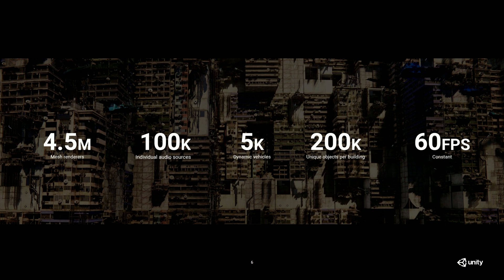Some numbers: in the scene that you saw, we have four and a half million mesh renderers, 100,000 individual audio sources. It's a little hard to hear the audio here, but all of those air conditioners are emitting sound, and all of the vehicles are emitting sound — something we just couldn't have done before using our previous technology. 5,000 dynamic vehicles flying around and pathing, 200,000 unique objects making up each of those buildings. Those buildings are not single objects — they're composed of thousands of sub-objects — and running at 60 frames a second.